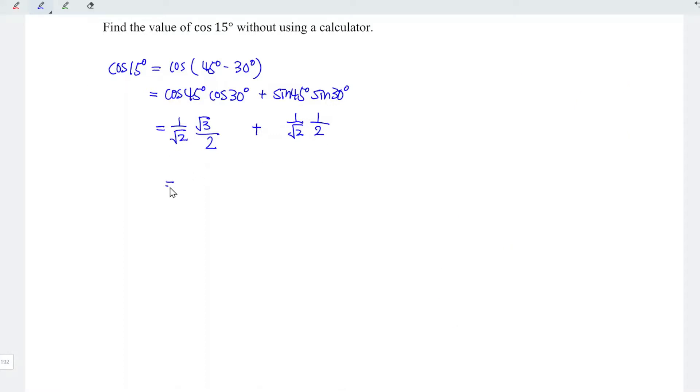And this equals square root of 3 plus 1 divided by 2 times square root of 2. To rationalize the denominator, we can multiply square root of 2 to the denominator. Of course, we must multiply exactly the same thing to the numerator, so that we won't change the value at the end. We can only change the form. This is very important.